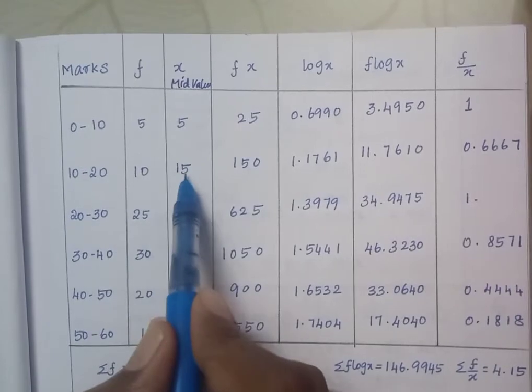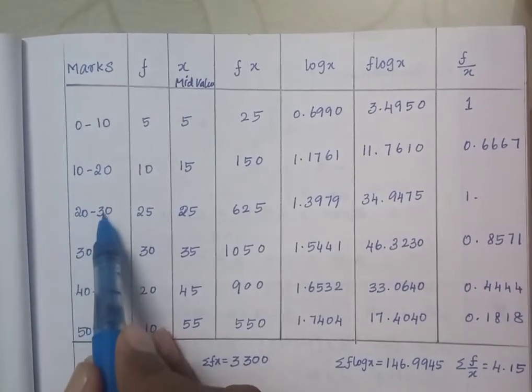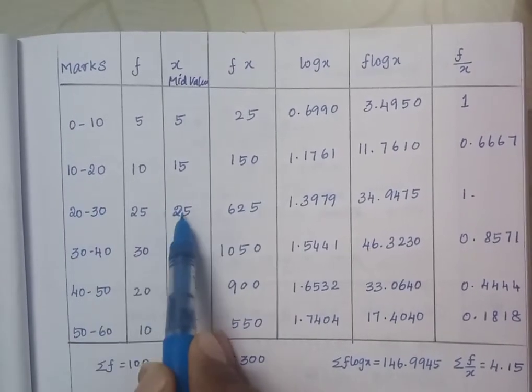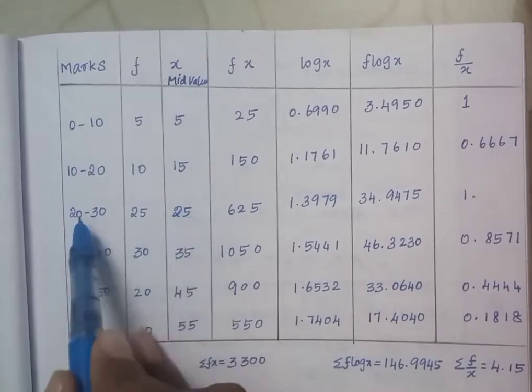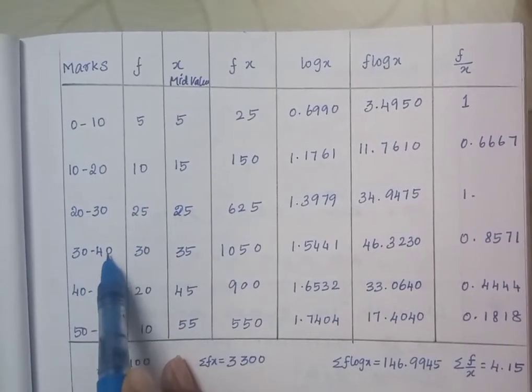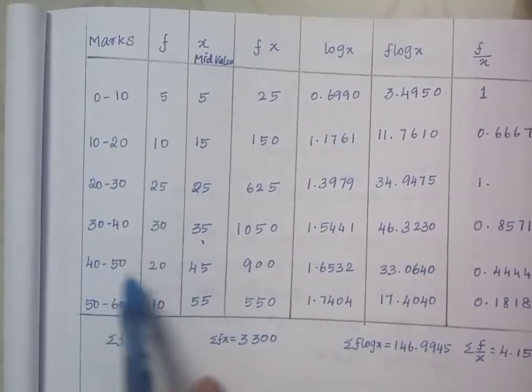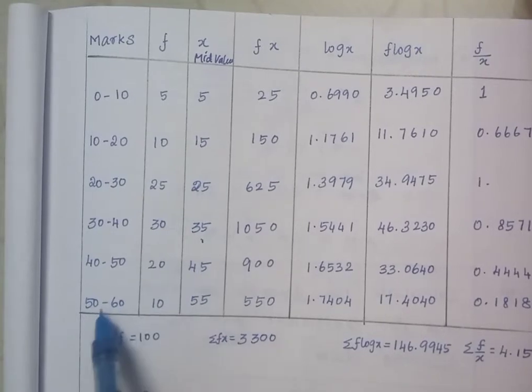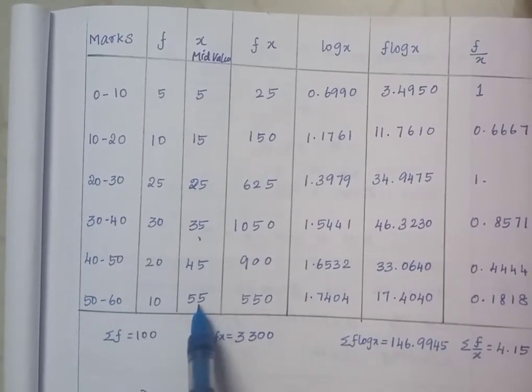10 plus 20 equals 30, 30 by 2 equals 15. Add the interval and divide by 2, that is the middle value. 20 plus 30 equals 50, 50 by 2 equals 25. 30 plus 40 equals 70, 70 by 2 equals 35. 40 plus 50 equals 90, 90 by 2 equals 45. 50 plus 60 equals 110, 110 by 2 equals 55.